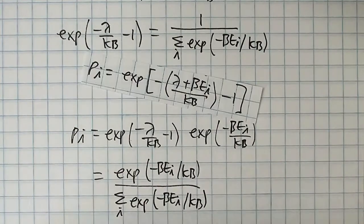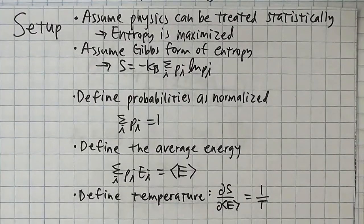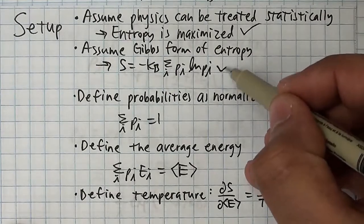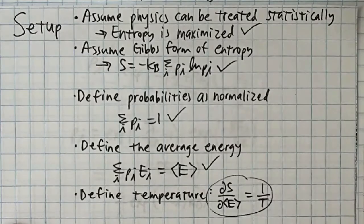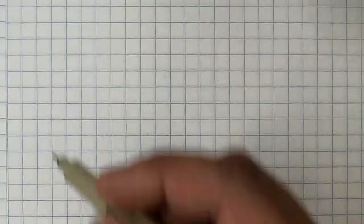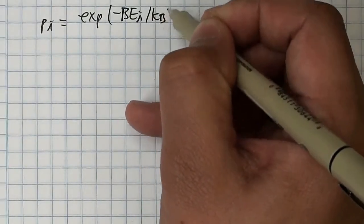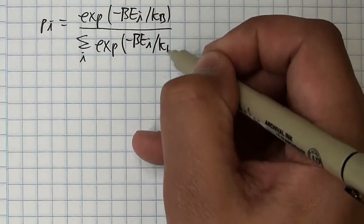We used all of the assumptions and all the definitions. We've maximized the Gibbs entropy subject to all the constraints, but oops, we don't have temperature in there yet. I think temperature is going to be important. We have a definition of temperature based on the change in entropy, so let's see what our new form of pi tells us about the entropy.